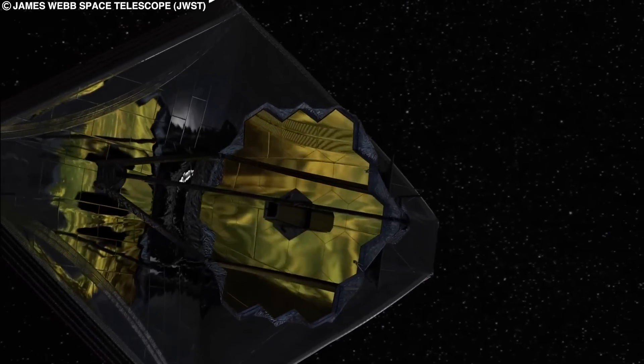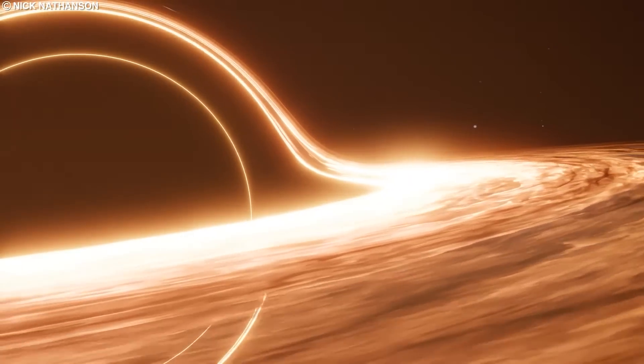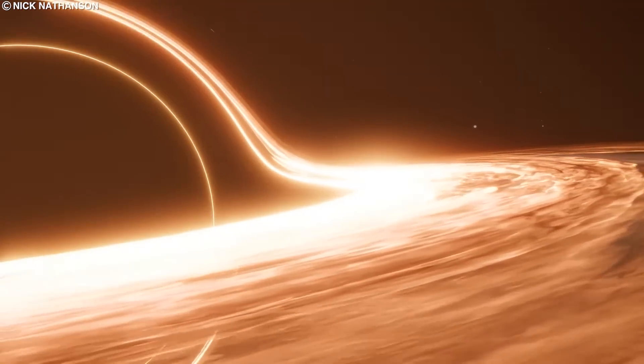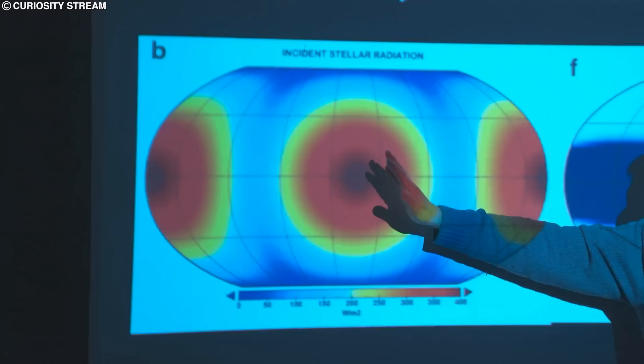In collaboration with the Event Horizon Telescope, James Webb will attempt to understand the flickering effects of Sagittarius A which has an apparent tendency to flare up on an hourly basis making it incredibly difficult to image.